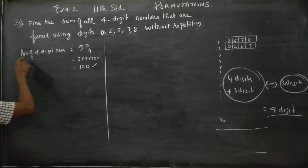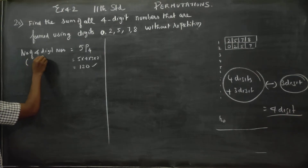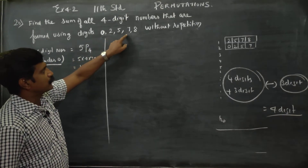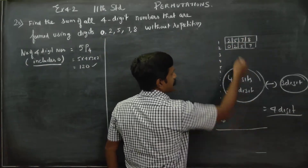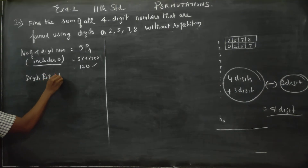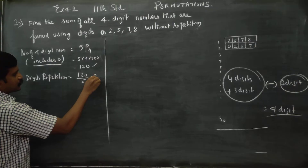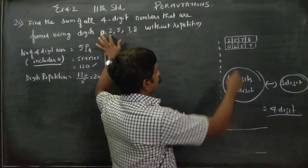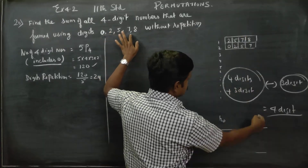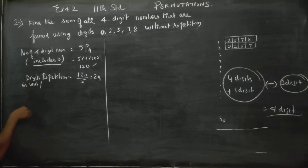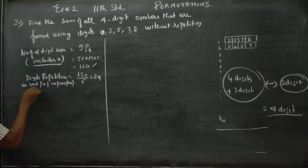First of all, the number of 4-digit numbers — this includes 0 also. How many digits? 1, 2, 3, 4, 5. Each digit repeats: digits repetition is equal to 120 divided by 5, equal to 24. Every digit repeats 24 times — 24 times 0, 24 times 2, 24 times 5, 24 times 7, 24 times 8. This is in unit place, 10th place, and 100th place. This is the digits repetition.